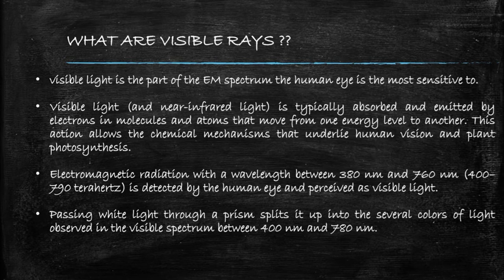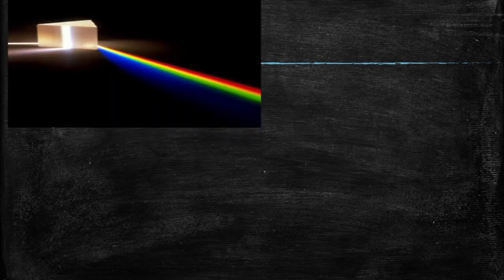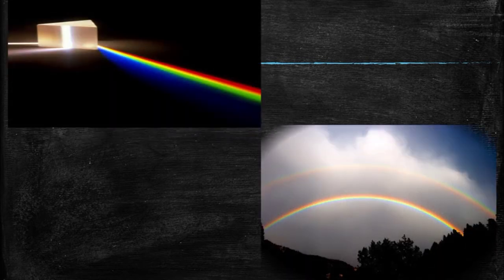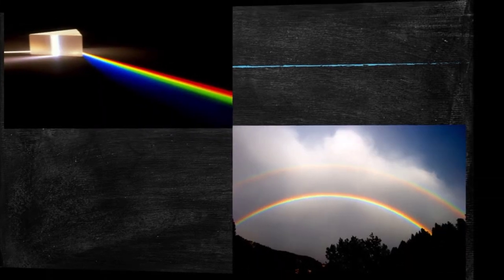And its wavelength is between 380 nanometers and 760 nanometers, which is observed using the prism experiment, wherein the white light will be passed through the prism and it gets split into several colors of light, which is observed in the visible spectrum between 400 nanometers and 780 nanometers. This is shown in the first picture and the visible rainbow is displayed here.